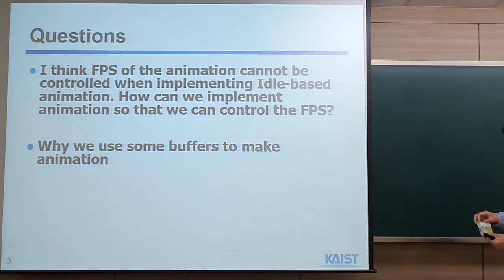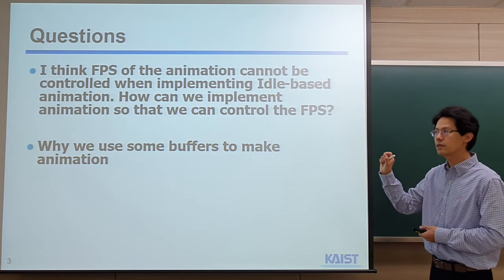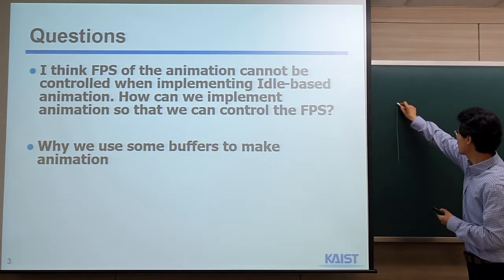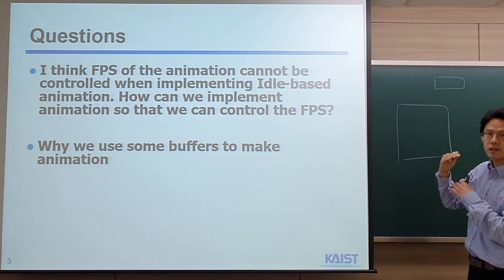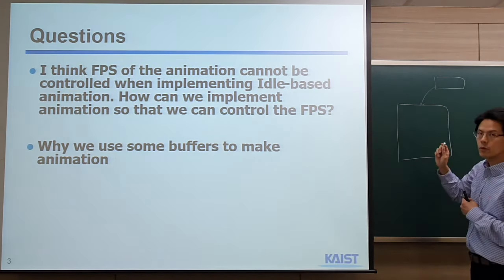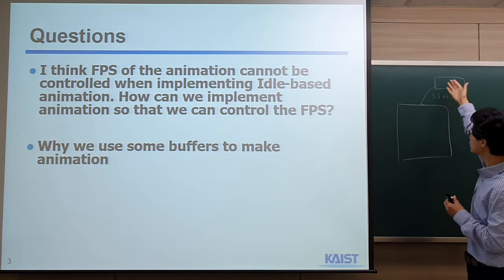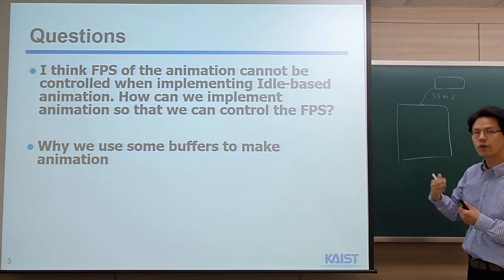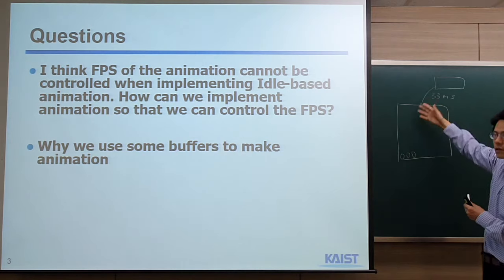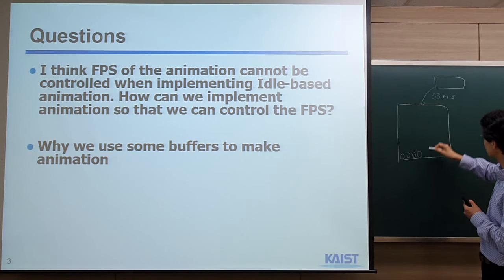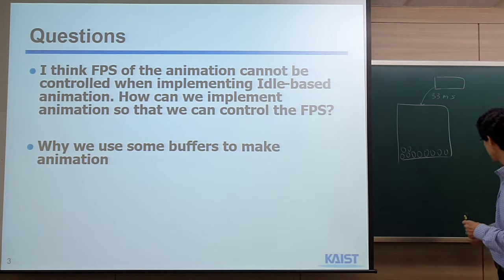If you're using only one buffer, as we did in assignment 1 with the Julia set, the monitor has its own refresh rate, say 30 frames per second, and it accesses the color buffer every 33 milliseconds. Drawing the Julia set is very slow — we draw pixel by pixel, and the monitor shows a partially drawn image. Sometimes this might be desirable, but usually it's not. That's why we use two buffers.